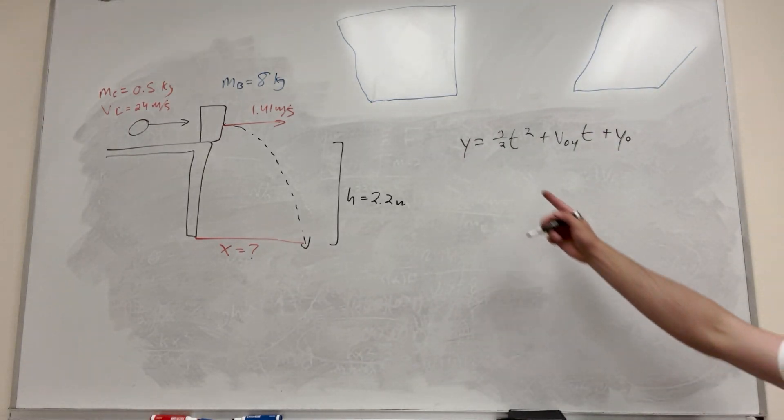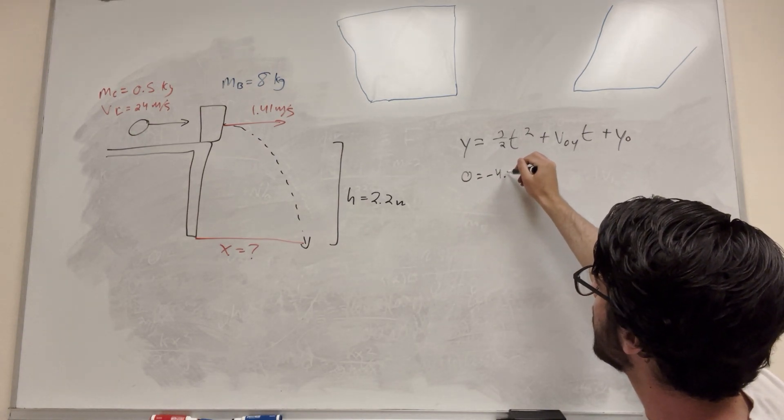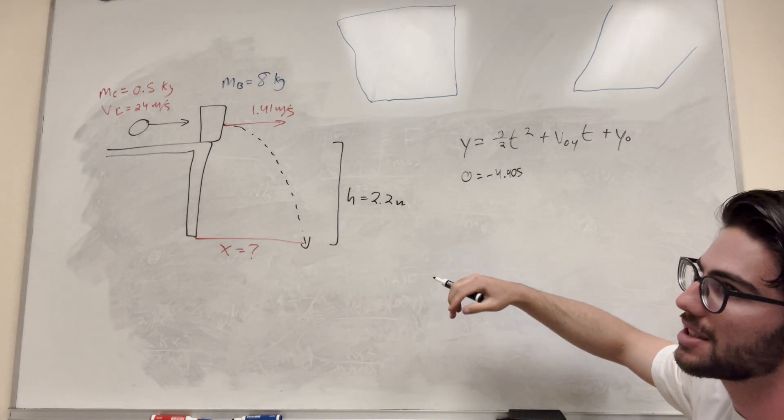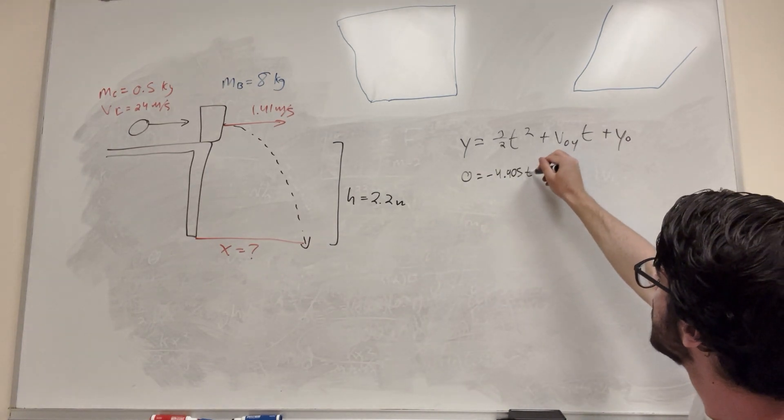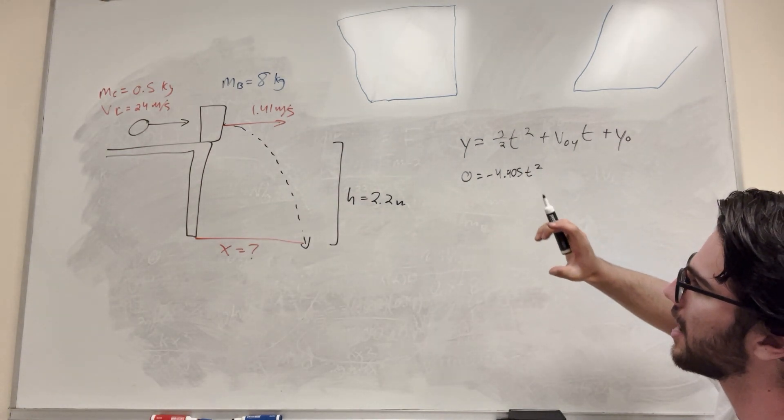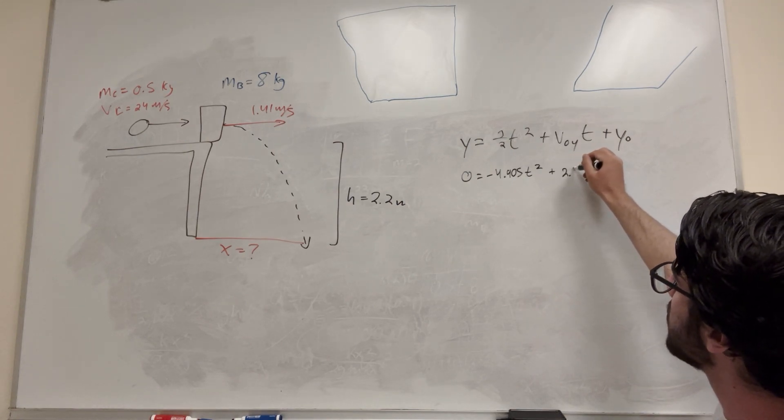We're trying to find that y is equal to 0. So we're going to say 0 is equal to gravity is negative 4.905. So gravity is negative 9.81, but then it's divided by 2. So this is t squared. Its initial velocity in the y direction is going to be 0. It's just stopped there.